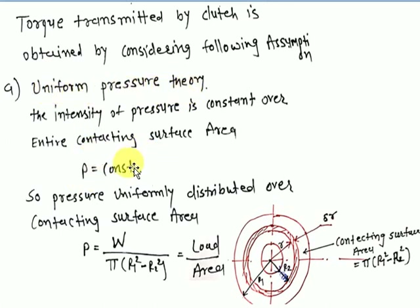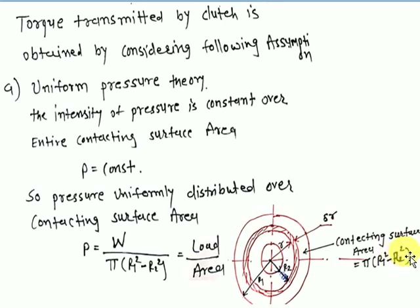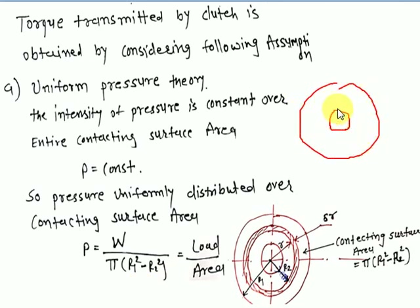For uniform pressure theory, pressure p = constant — meaning it is uniformly distributed over the contacting surface area from r2 to r1. The pressure is: p = W / (π(r1² - r2²)), where the denominator is the contacting surface area — the annular region between outer radius r1 and inner radius r2.